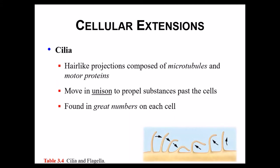Cilia are very small hair-like projections coming out of a cell, but these are different than microvilli. They are made out of microtubules and have motor proteins that help these microtubules to move — so cilia actually move. Usually if a cell has cilia, it has many of them, and they all have a sweeping motion. For example, you have cilia in your respiratory tract that help to sweep up particles that may get down in your trachea or bronchial tubes, sweeping up mucus and other debris.